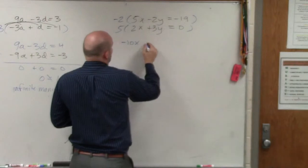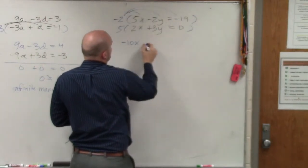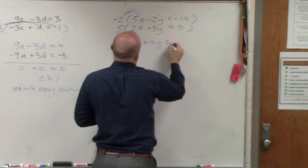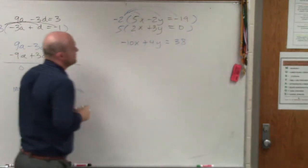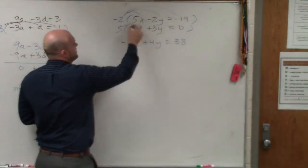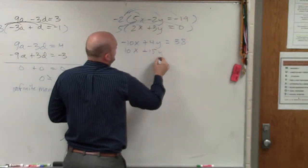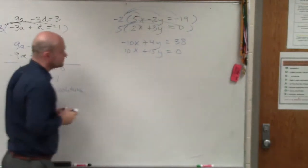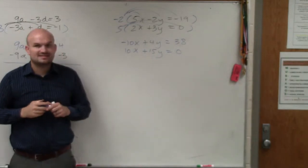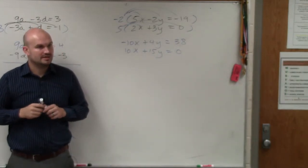So when I multiply by applying the distributive property, I get negative 10x plus 4y equals 38. And then by applying the distributive property on the bottom, I get 10x plus 15y equals 0. Do you guys see how that worked? Yes?